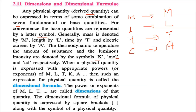When a physical quantity is expressed with appropriate powers of M, L, T, A, K for temperature, this expression for the physical quantity is known as the dimensional formula. The power or exponent of M, L, T, A, or K — the power — is known as the dimensions of that quantity.